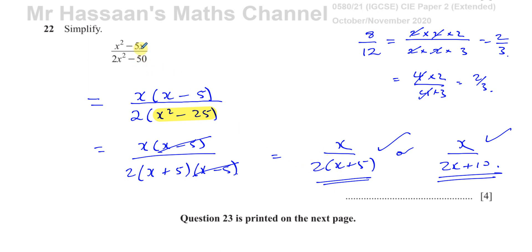The key to answer this question is to factorize the numerator, factorize the denominator and then cancel out common factors.